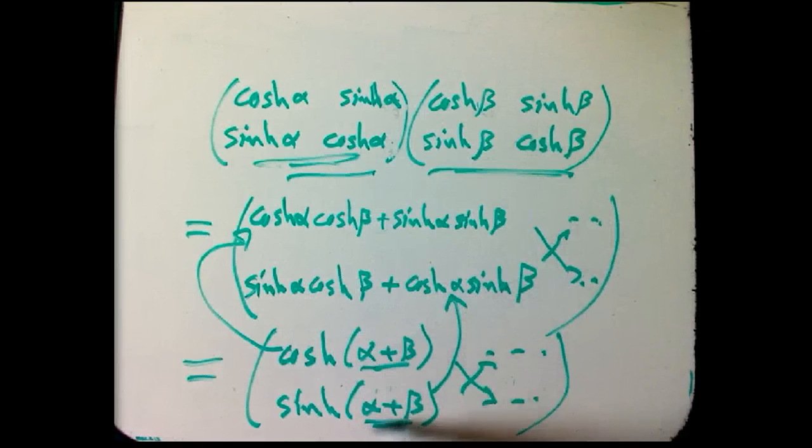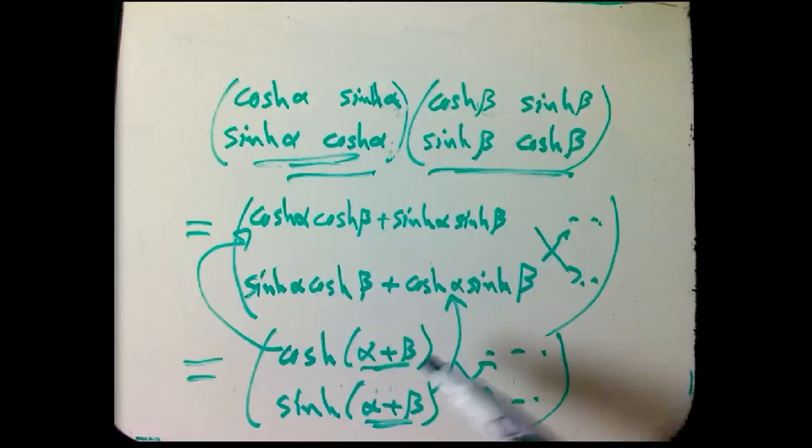Or you can kind of unravel everything I've done and see that this has to be true for the angles to be additive, because we know that these are how Lorentz transformations combine. We know that those angles are additive, because that's how we found it. We first found something that was multiplicative, the z parameter, and then we took the log of it, and so this has to work.